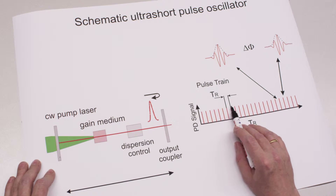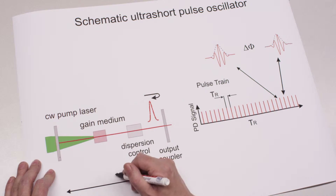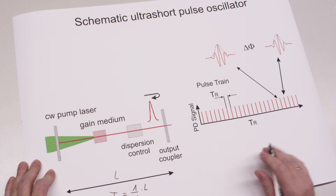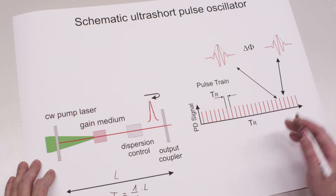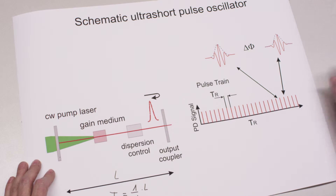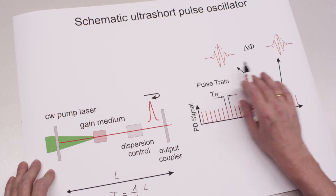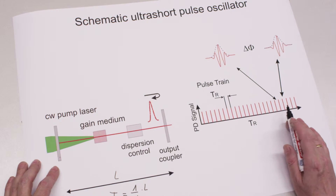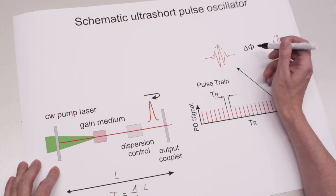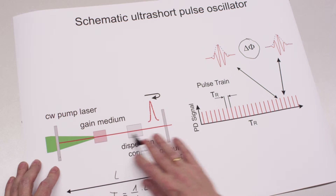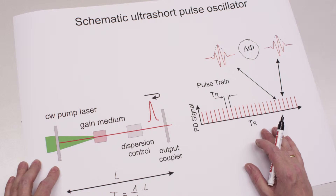The spacing between pulses is given by one round trip time. When the cavity has a certain length, the round trip time is given by one over the group velocity times the cavity length. If we zoom in to these pulses, we see the electric field, and we recognize that the electric field of successive pulses is not identical — it changes. The change between two adjacent pulses is the phase slip: the carrier envelope phase accumulated per round trip due to dispersion in the cavity.